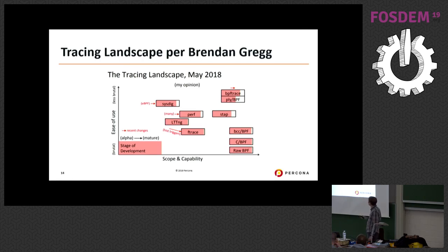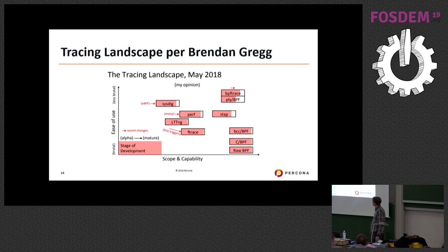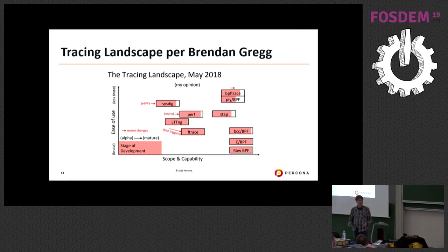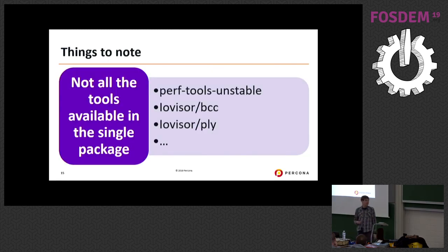Another image from Brendan Gregg shows different tools plotted by ease-of-use versus maturity. Raw BPF was quite mature but very brutal to use. What's nice is we now have tools in the corner that are easy to use, powerful, and mature. eBPF is now at a very great point in the Linux kernel — very powerful and at the same time very mature to use.